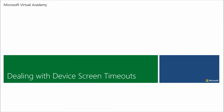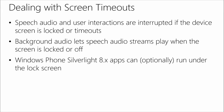Next up is dealing with device screen timeouts. These devices, of course, for the sake of preserving battery, naturally have a screen that eventually times out. After a few minutes — you can configure this yourself — but it's not a good idea to leave the screen on all the time. By default it's one minute. So if the screen times out, whatever interaction you were having in the app is going to be interrupted, and whatever audio was being played back is going to be interrupted. On the Windows version I was able to play audio in the background using the background media capable setting. On Windows Phone, you'd actually have to create a full background audio agent, which is a little more involved.